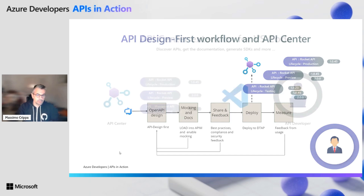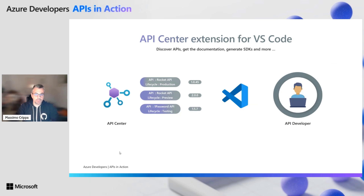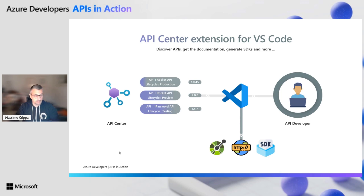The second persona is our developer. They want to go and fetch the data available in the API Center. There is a Visual Studio Code extension that allows you to quickly connect and navigate the API Center. The developer can discover API version 2, fetch the OpenAPI specification, generate an HTTP test file, and if they want, create an SDK by leveraging the Kiota open source tool.